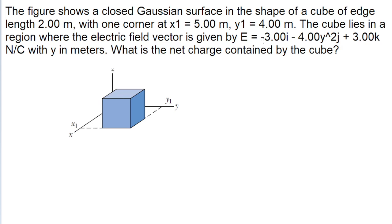This problem starts off looking a little bit scary, because we're given this formula for the electric field, and it has three components to it: an I component, a J component, and a K component. But right off the bat, we can make this problem much less scary by recognizing that because this is a problem where we want to analyze flux, two components of this vector can be ignored because they don't actually contribute anything to the net electric flux through this Gaussian surface.